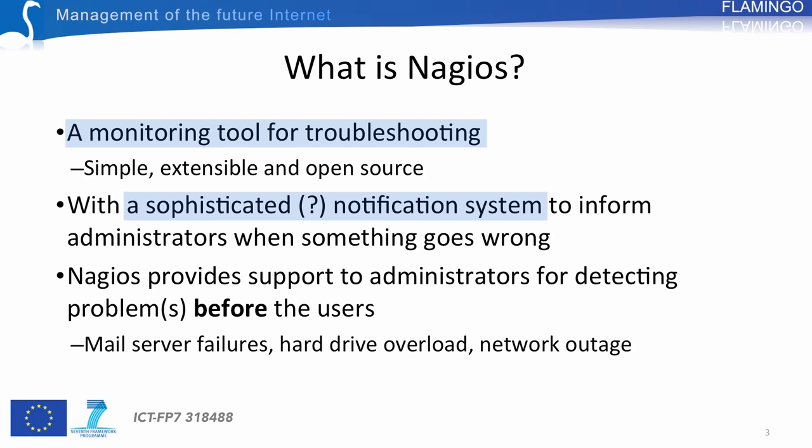By sophisticated, we mean a notification system including filtering and escalation mechanisms. It is important to send the right information to the right person. Filtering allows you to restrict the notifications that are sent to a given person — too much information kills information.